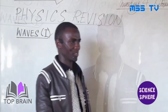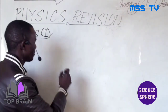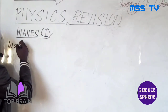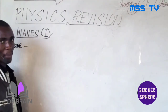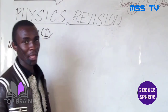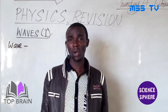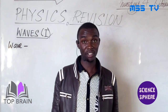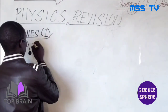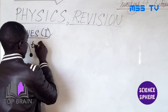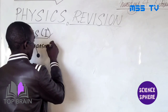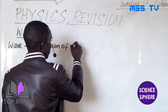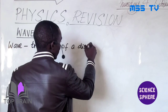We've talked about waves. I want to first give the definition of a wave. So we are going to start by defining a wave. What is a wave? A wave is basically the transmission of a disturbance.